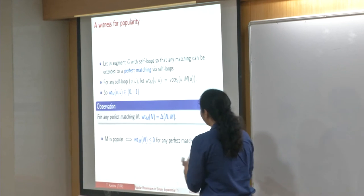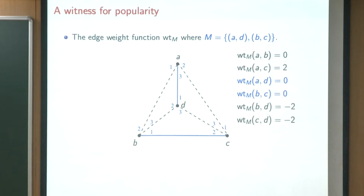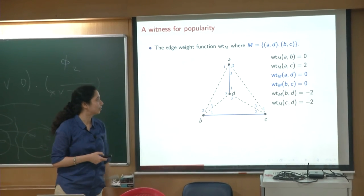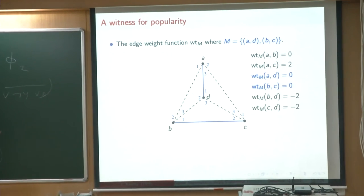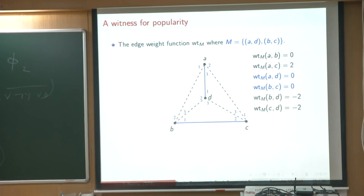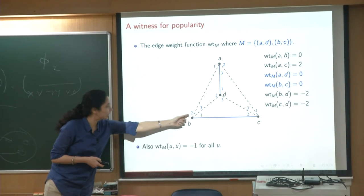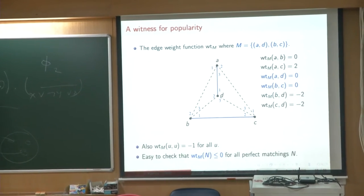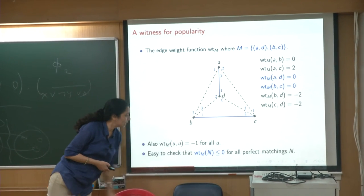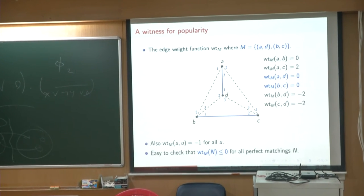So popular matchings and stable matchings are actually much closer than their definitions appeared to be initially. To illustrate the edge weight function on this graph: if you look at the blue matching, both edges in it have weight 0. AC is a blocking edge, so its weight would be +1 +1 = +2. For the self-loops, each has weight -1 because every vertex prefers to be matched to a genuine neighbor than to be left unmatched. It's easy to check that for any perfect matching in this graph, its weight is at most 0 — that's a proof of the popularity of the blue matching.